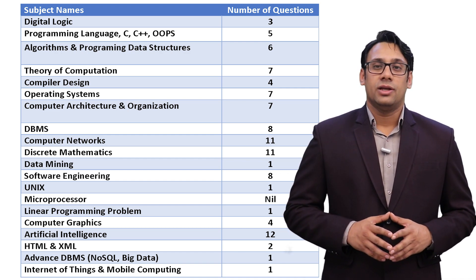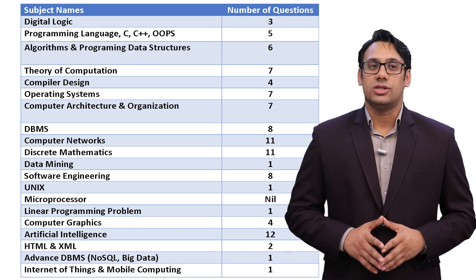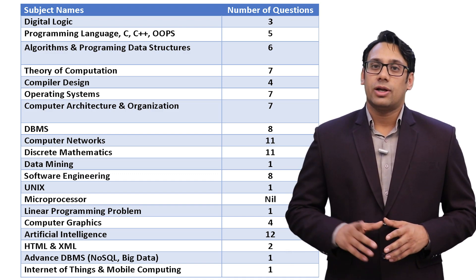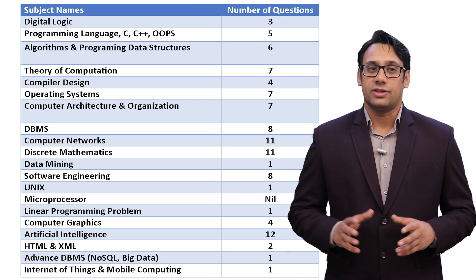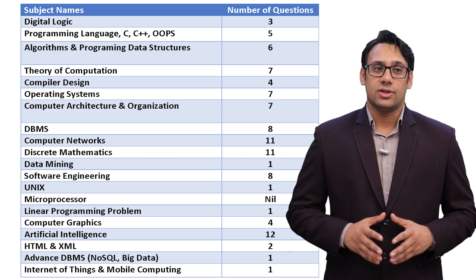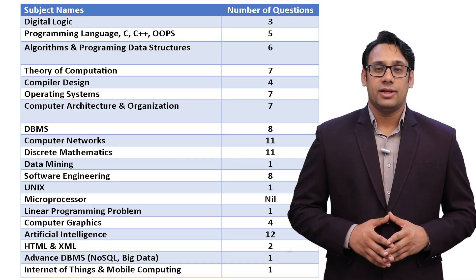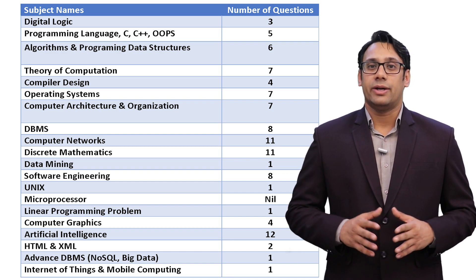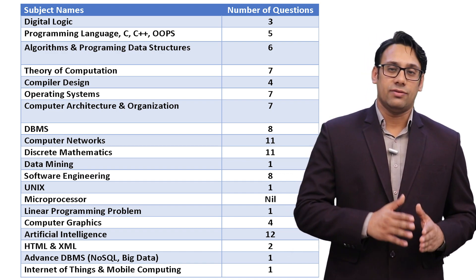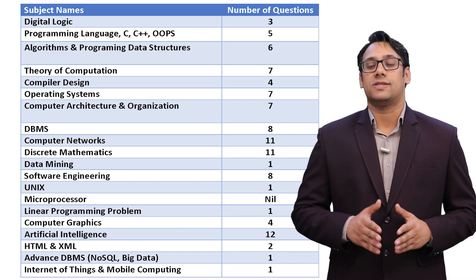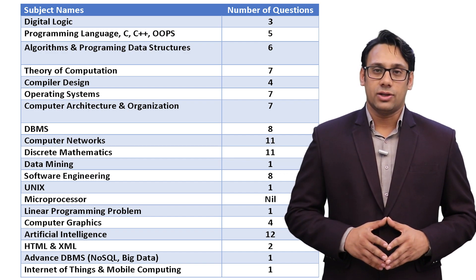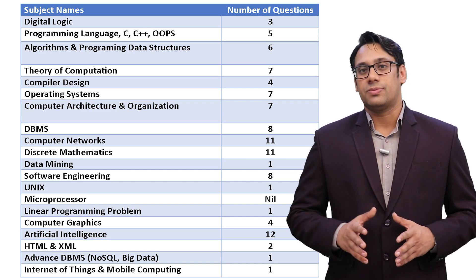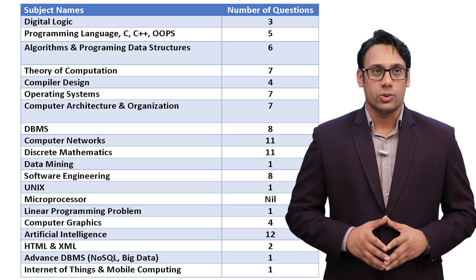Software Engineering — 8 questions. Unix — 1 question. Microprocessor — 0 questions (not asked at all this year). Linear Programming — 1 question. Computer Graphics — 4 questions. Artificial Intelligence — 12 questions. HTML and XML — 2 questions. Advanced DBMS including NoSQL and Big Data — 1 question. Mobile Computing and IoT — 1 question.